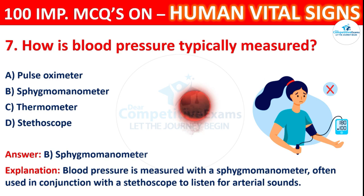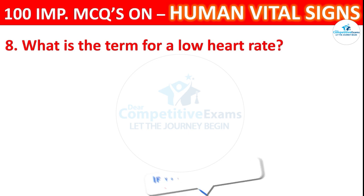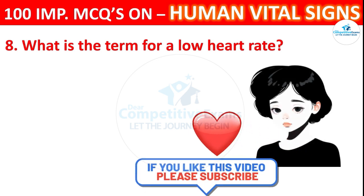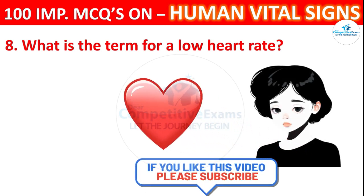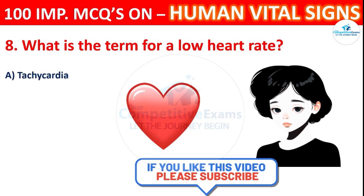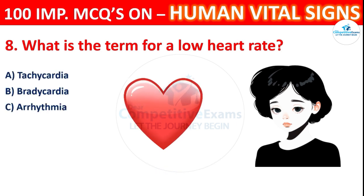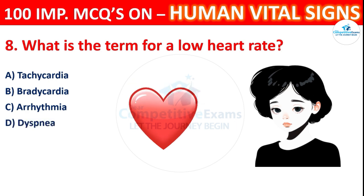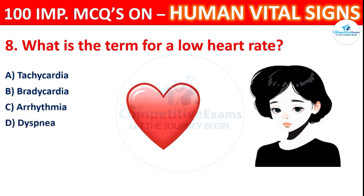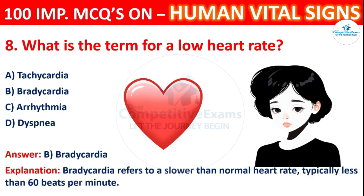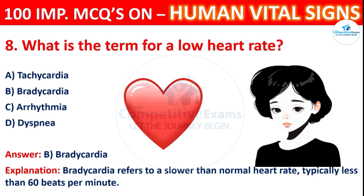Question 8: What is the term for a low heart rate? Options: tachycardia, bradycardia, arrhythmia, or dyspnea. The correct answer is B, bradycardia. Bradycardia refers to a slower than normal heart rate, typically less than 60 beats per minute.